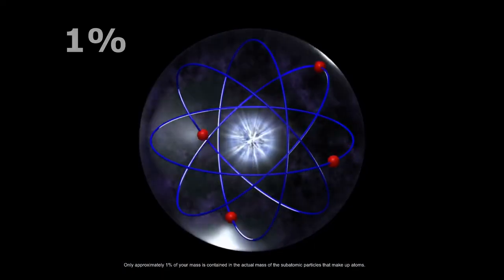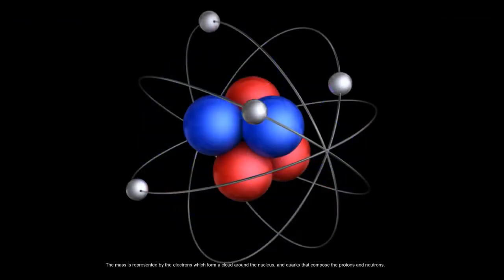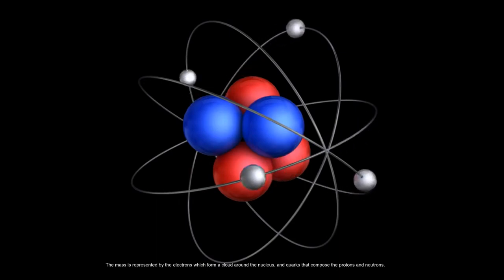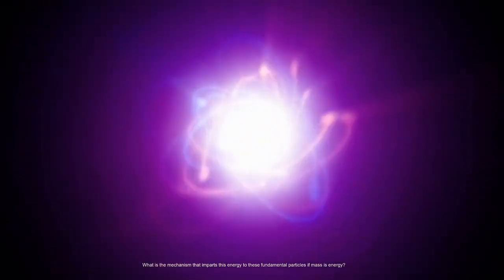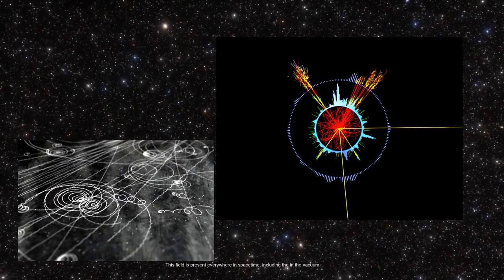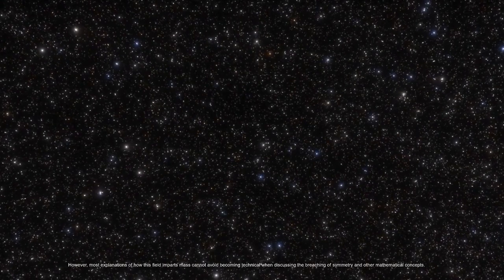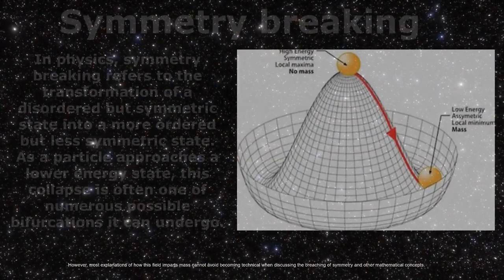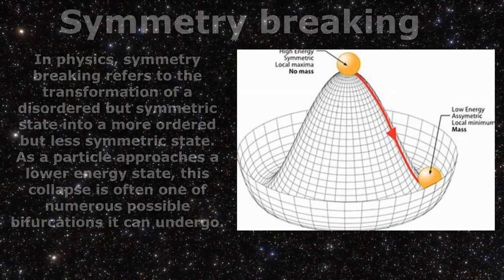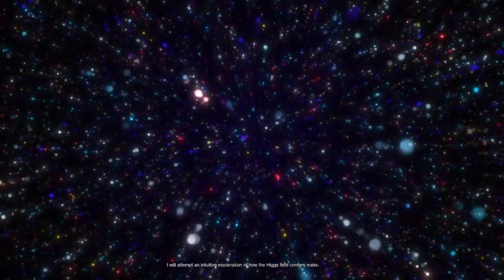Only approximately 1% of your mass is contained in the actual mass of the subatomic particles that make up atoms. The mass is represented by the electrons, which form a cloud around the nucleus, and quarks that compose the protons and neutrons. How do these subatomic particles acquire their intrinsic mass? What is the mechanism that imparts this energy to these fundamental particles if mass is energy? This is where the Higgs field enters the equation. This field is present everywhere in spacetime, including in the vacuum. In this context, mass is merely one of the quantum properties that certain particles possess. However, most explanations of how this field imparts mass cannot avoid becoming technical when discussing the breaching of symmetry and other mathematical concepts. Let us comprehend how the Higgs field operates. I will attempt an intuitive explanation of how the Higgs field confers mass.